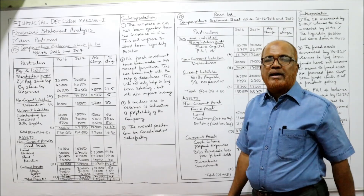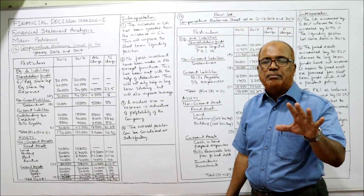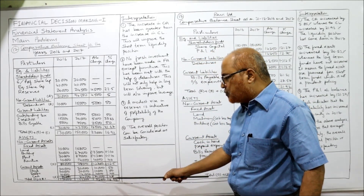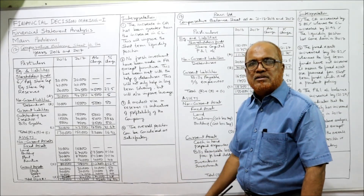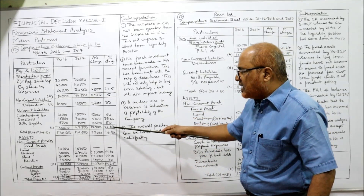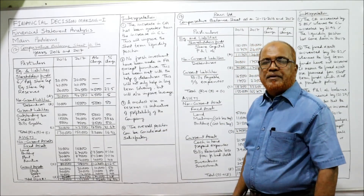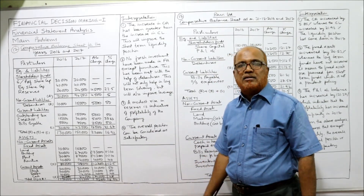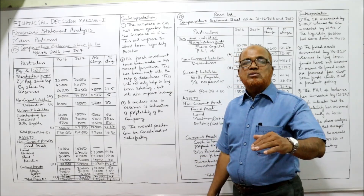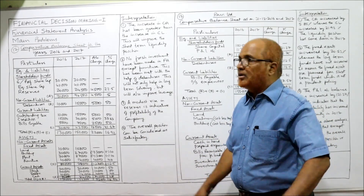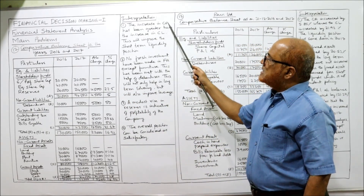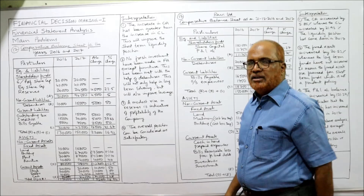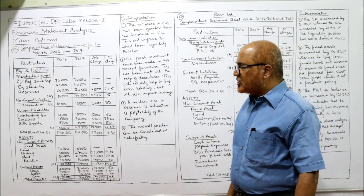For interpretation, first we compare current assets with current liabilities to find the short-term liquidity position. Current assets have increased by 48%, whereas current liabilities have increased by only 41.67%. Current liabilities increased at a lower rate while current assets increased at a higher rate — so it is a good liquidity position. In other words, the liquidity position has improved in 2017, as the increase in current assets has been greater than the increase in current liabilities.